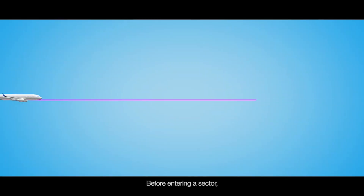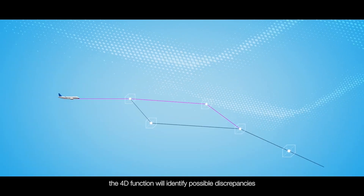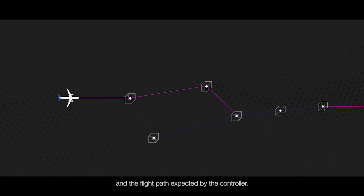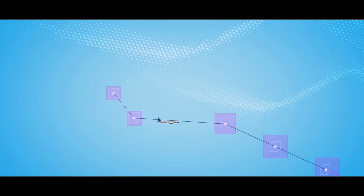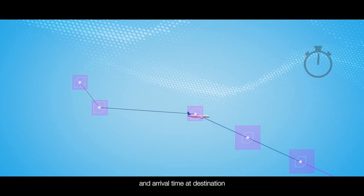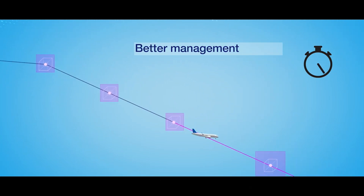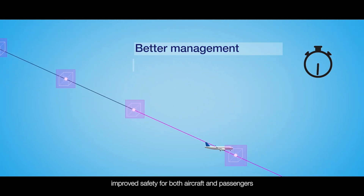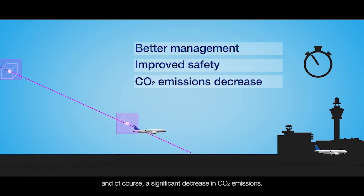Before entering a sector, the 4D function will identify possible discrepancies between the aircraft's intentions and the flight path expected by the controller. Finally, 4D will give accurate trajectory and arrival time at destination, resulting in a better management of airport movements, improved safety for both aircraft and passengers, and a significant decrease in CO2 emissions.